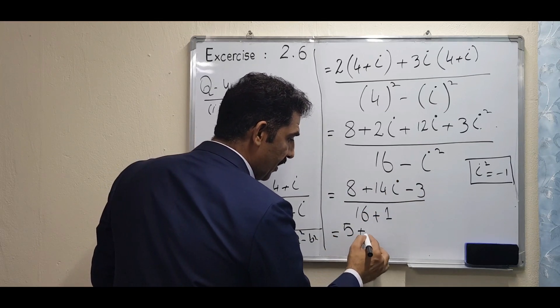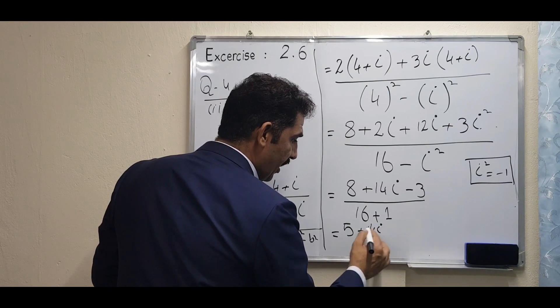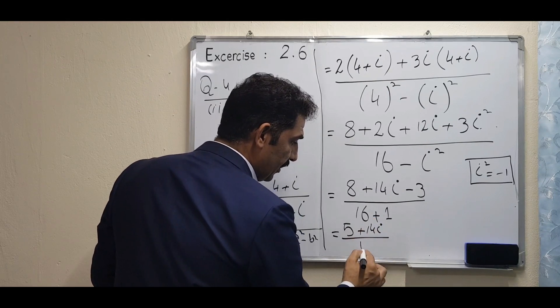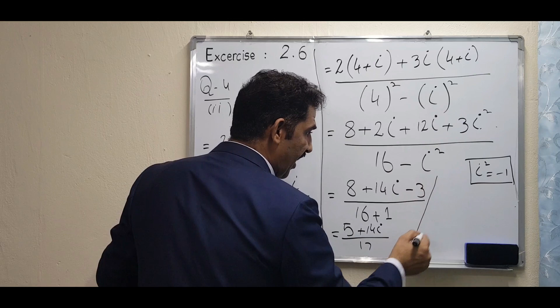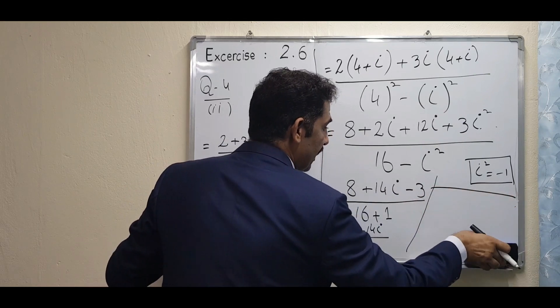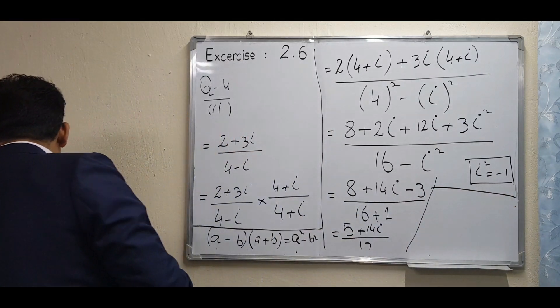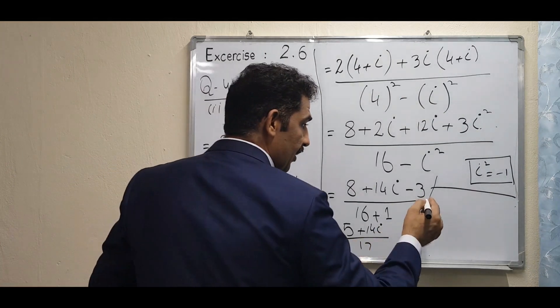Five plus 14 iota over 17. Then the final answer: you have to write the real part separate and imaginary part separate. So what will become?